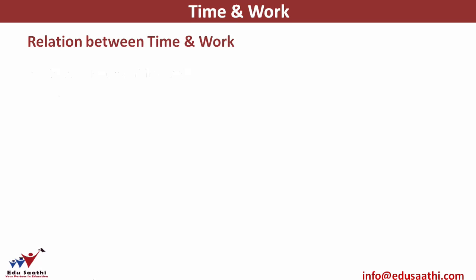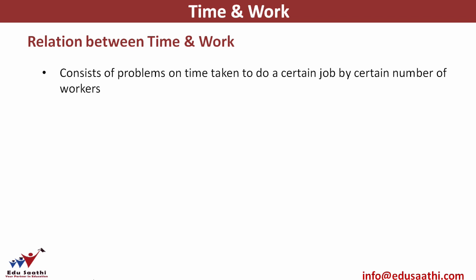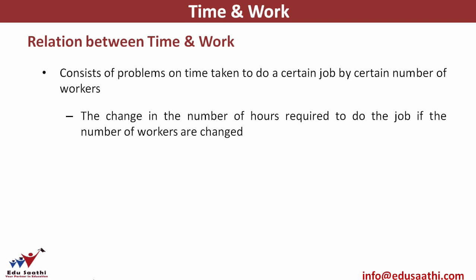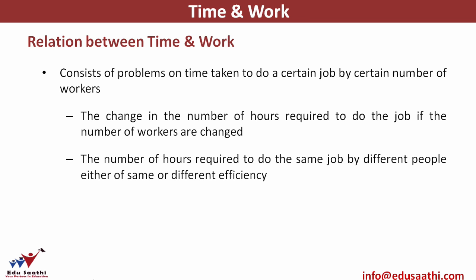Let's get started and look at the relationship between time and work. This relationship consists of problems on the time taken to do a certain job by a certain number of workers — basically finding how much time it takes to do a particular job given the number of workers, the change in hours if workers change, and the change in hours when people of same or different efficiency are employed.